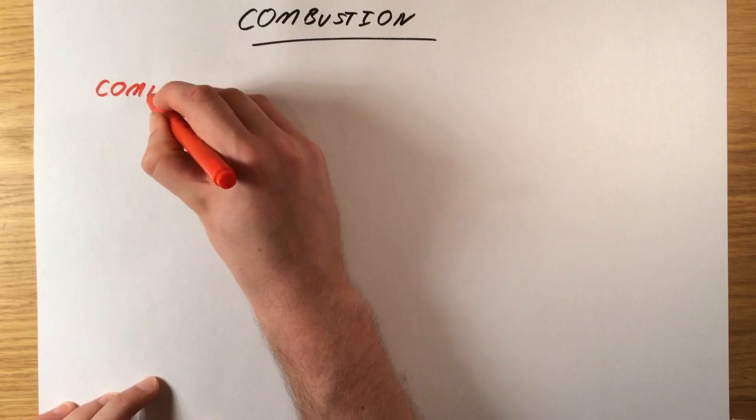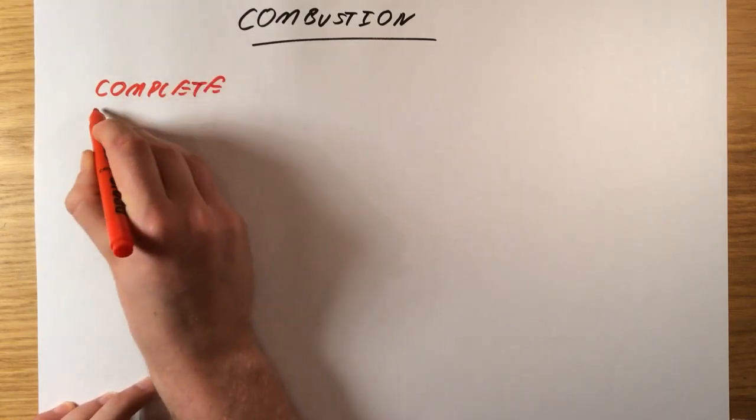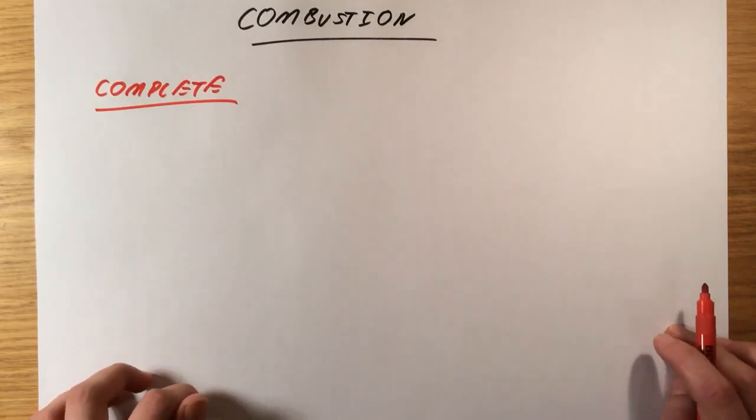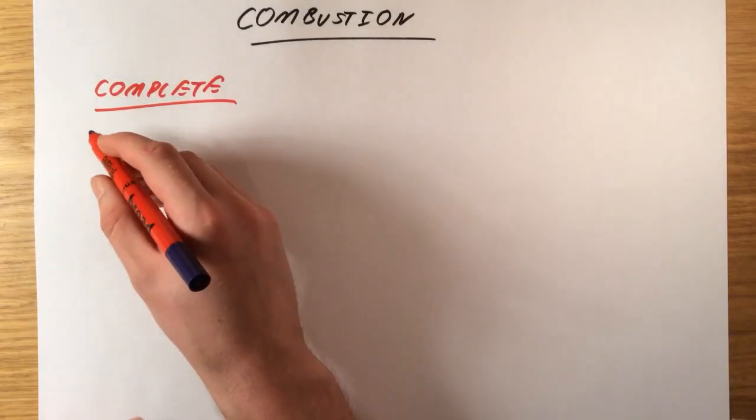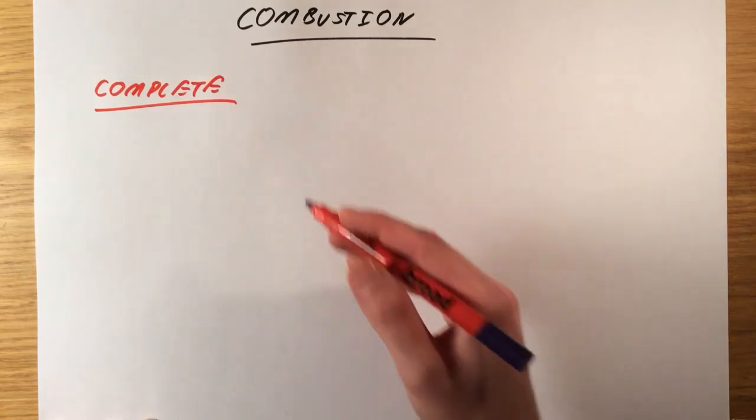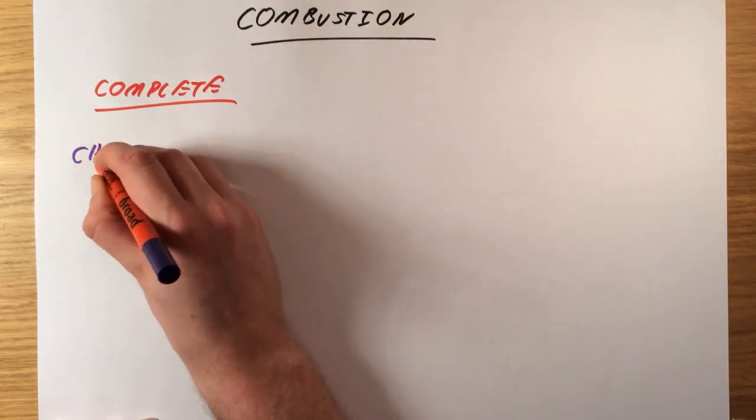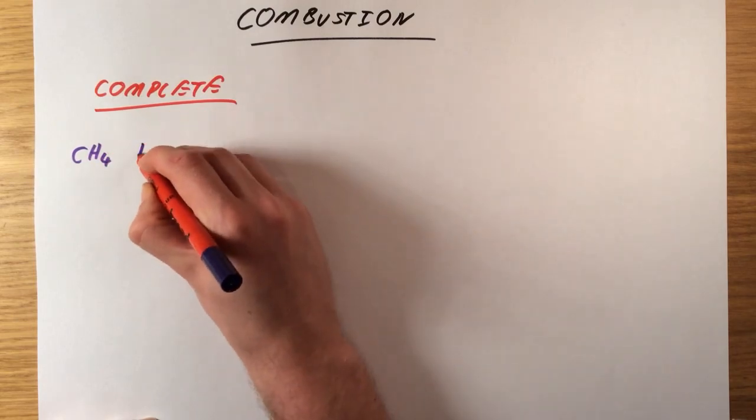So the first type of combustion we're going to talk about is complete combustion. In complete combustion, we are going to fully react the fuel and burn it in air. And when we do that, we're actually going to be reacting it with oxygen. I find it easier here to think about the atoms that are involved, by writing out the chemical formulae and working out what you produce. So let's pick a really simple example and let's pick methane, which is, as we said in the last video, going to have one carbon atom, four hydrogens.